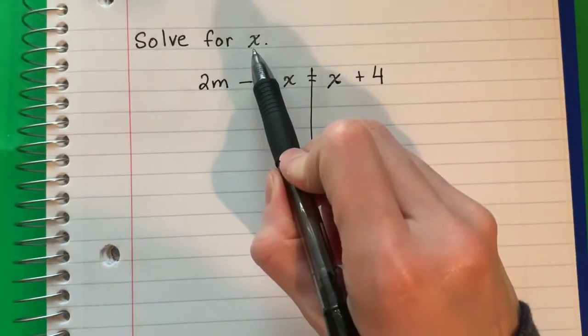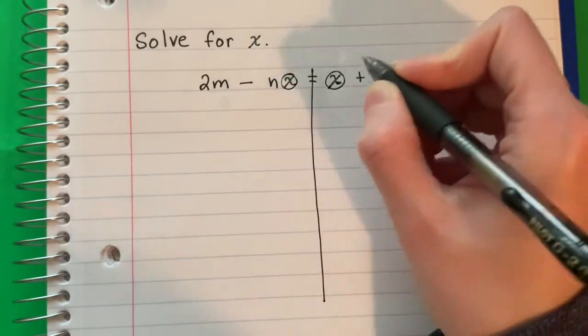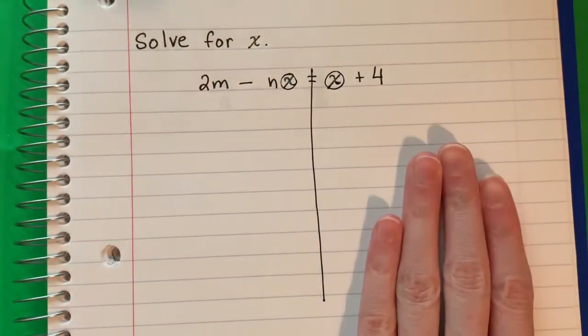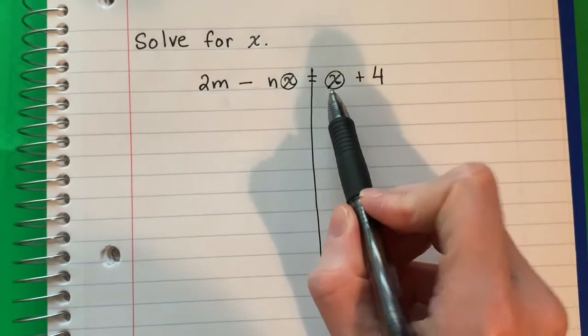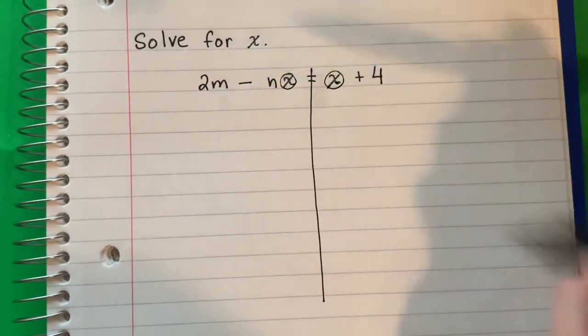I want the x alone so I'm going to circle my x's. I have two, one on the left and one on the right. I want all of my x's on the left. So I'm going to move this one first.